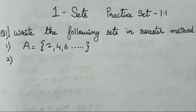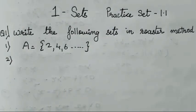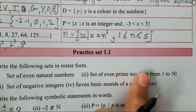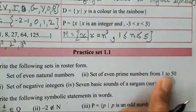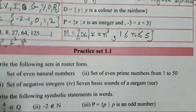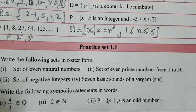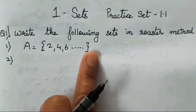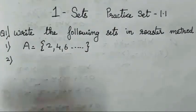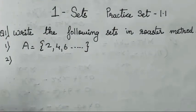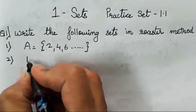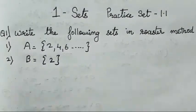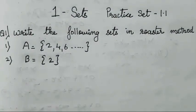Second one is: set of even prime numbers from 1 to 50. Over here they have mentioned even prime numbers from 1 to 50, meaning only the even prime numbers between 1 and 50 you have to write. The limit is mentioned, so we do not put a dotted line. Suppose I take B — the only answer is 2. The only even prime number between 1 to 50 is 2.